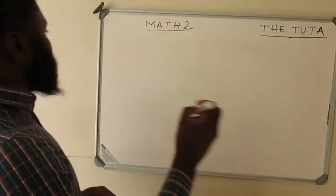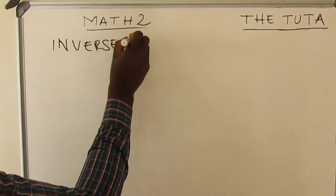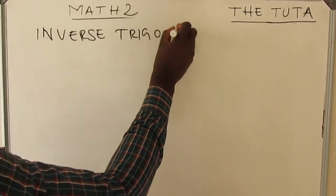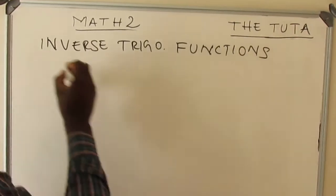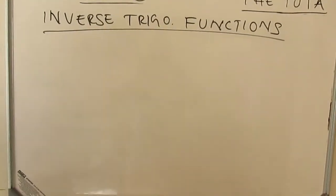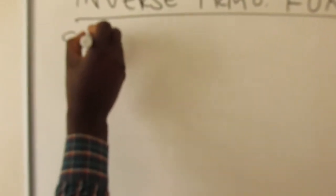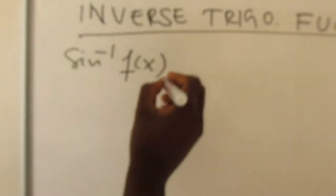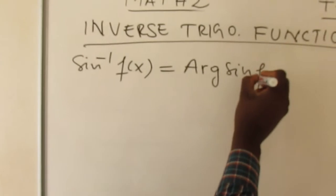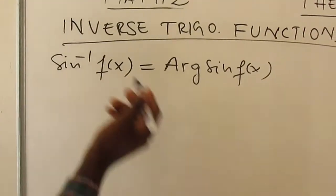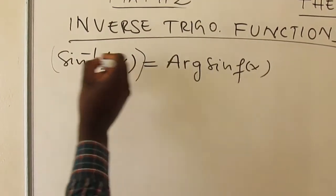Now let's start with inverse trigonometric functions. We have what we call arc sine of f(x). In some other books it's written as arcsin of f(x). So don't be scared when you see this — it's the same thing. But it's better for you to use the arc sine notation.